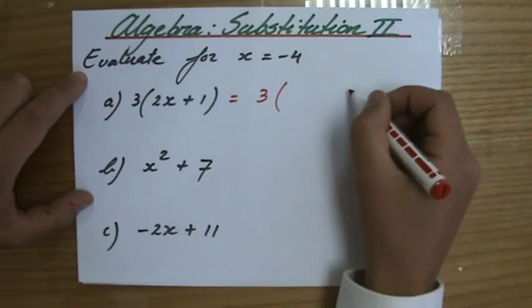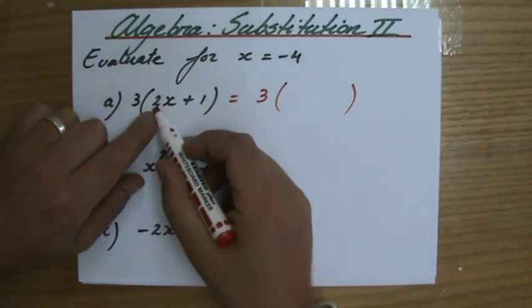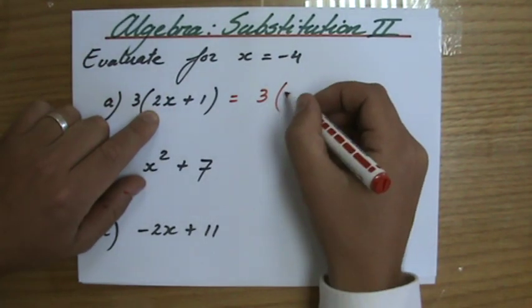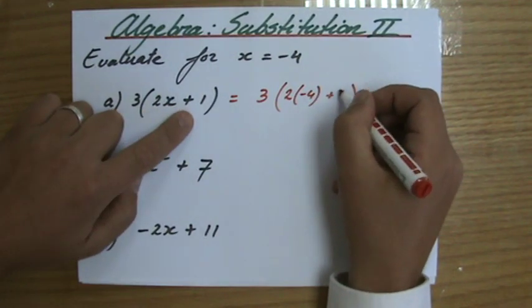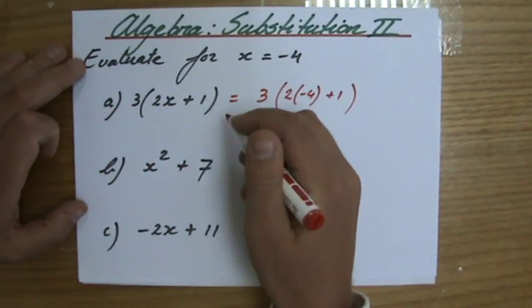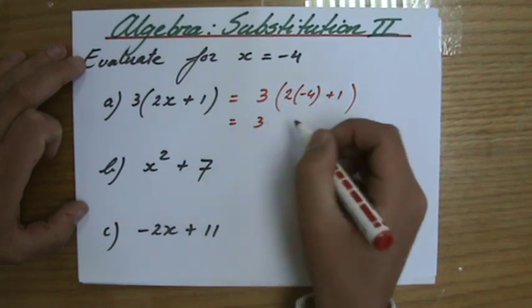It's three times, and first let's work out those brackets. 2 times x, so 2 times minus 4, yeah, 2 times minus 4 plus 1. Just do it step by step, then it's almost impossible to make a mistake.